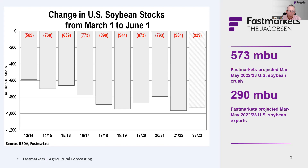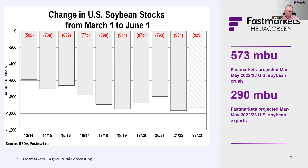Combined with net trade flows, we expect stocks will decline from the Q2 number we get this Friday to stocks on June 1st. The June 1st number will be very important, because by the time we get through the third quarter, we'll have a very good idea of where we expect the carryout to be. By that point the crop is planted and the market really starts to focus on how big the U.S. crop is going to be.